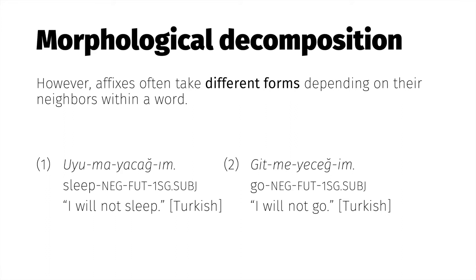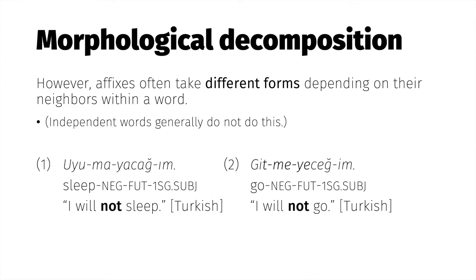However, there is a way in which building words from affixes can indeed be trickier than building phrases from words. That's because the same morpheme might take quite different forms depending on what word it belongs to. Check out the second Turkish verb, whose negative suffix has a totally different vowel. Independent words, on the other hand, tend not to influence each other's shapes in this way — the English word 'not' is identical no matter what verb it negates.